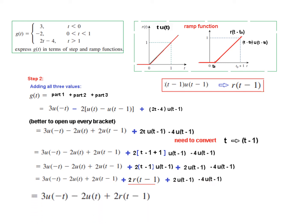Our final answer for example 7.8 is: u(-t) - 2u(t) + 2r(t-1). I hope you have got an understanding, and now with this base we will solve the practice problem.